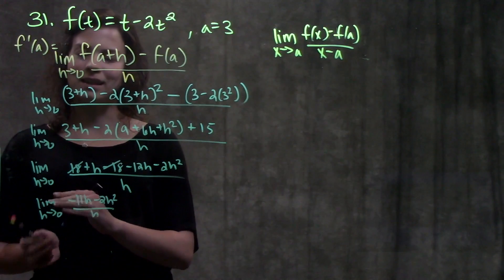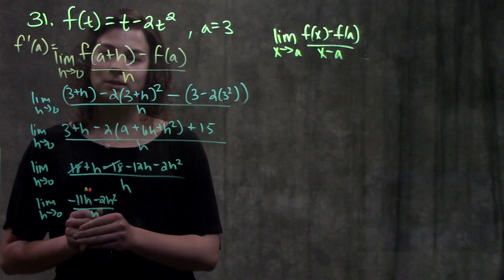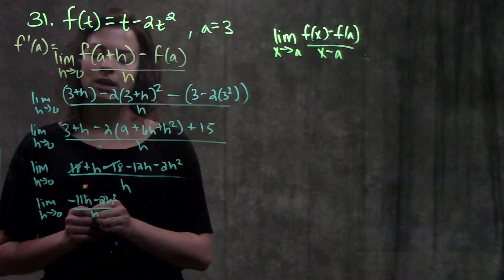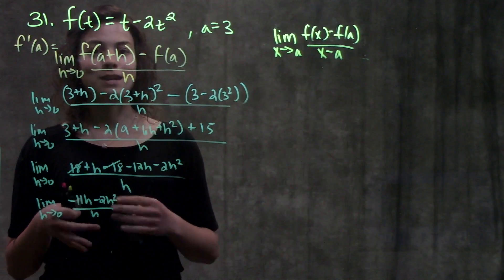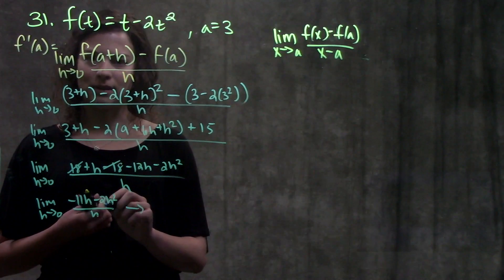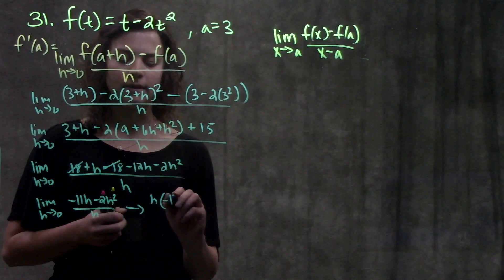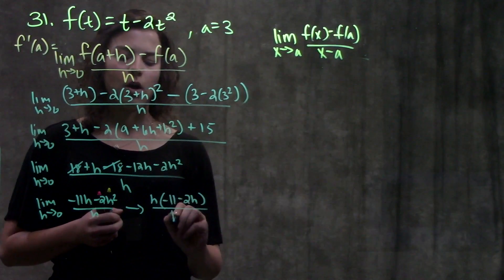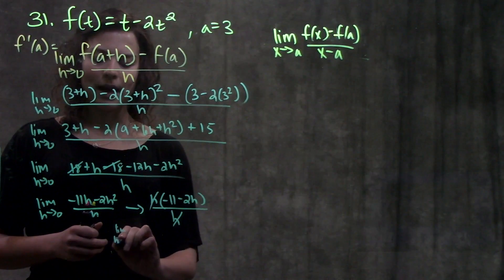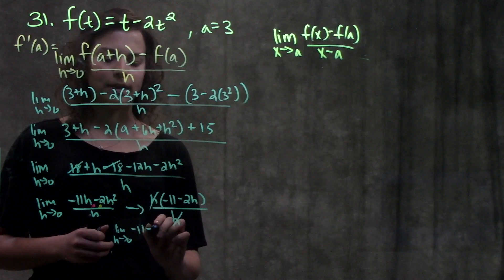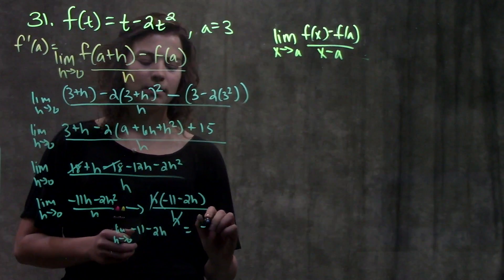Remember this is saying the limit as h approaches 0 of whatever I have left. If I were to try direct substitution at this point and plug in 0 wherever I saw an h, I'd end up getting 0 over 0. It's an indeterminate form, not a bad answer, you need to do more work. So let's try simplifying. On the top, I see that I can take out an h, and that'll leave me with minus 11 minus 2h over h. Conveniently, these h's will cancel. And now I'm just left with the limit as h approaches 0 of minus 11 minus 2h. I plug 0 in for h and I'm left with just minus 11.